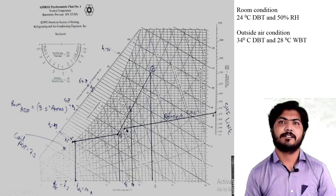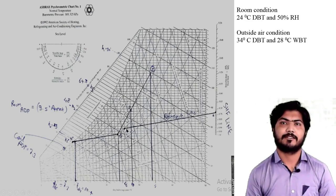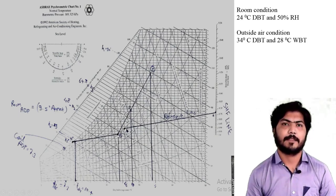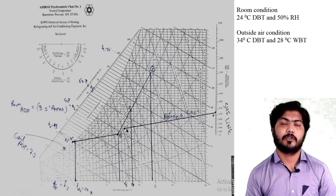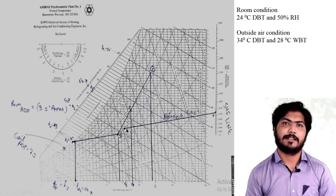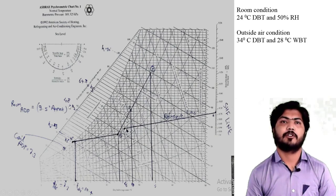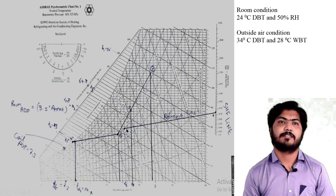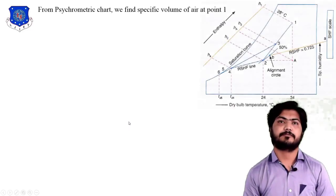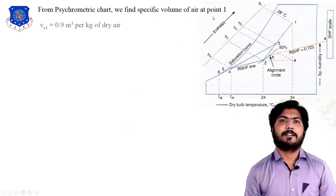The room condition is 24 degree centigrade DBT and 50% RH, which is point 2. We draw the vertical line at 24 degree centigrade and the RH curve line intersects at point 2. The enthalpy H2 is calculated as 48 kJ/kg from the psychrometric chart. To locate point A, draw a vertical line from point 1 and a horizontal line from point 2; these intersect at point A with enthalpy of 59 kJ/kg.